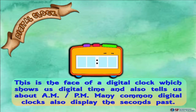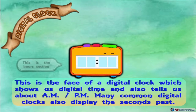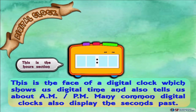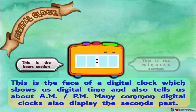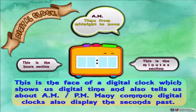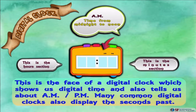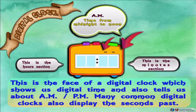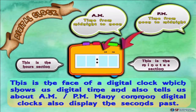This is the face of a digital clock which shows us the digital time and also tells us about A.M. and P.M. Many common digital clocks also display the seconds. This is the hours section and this is the minutes section. A.M. means time from midnight to noon, and P.M. means time from noon to midnight.